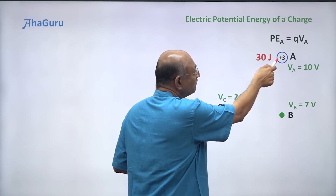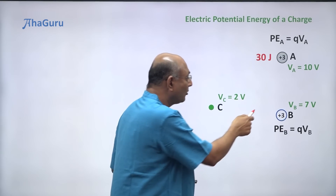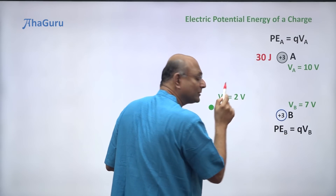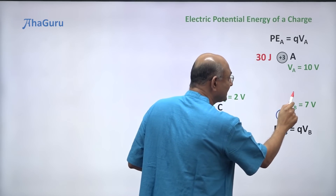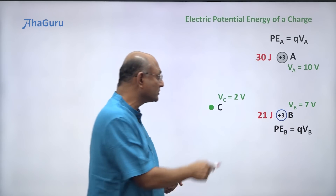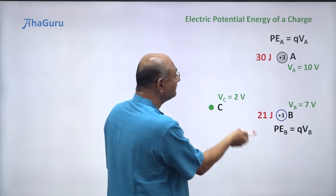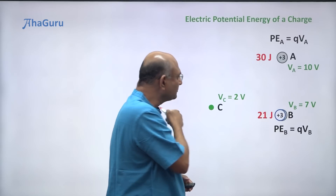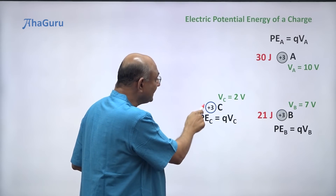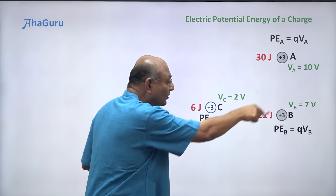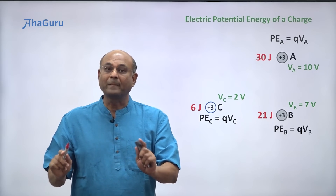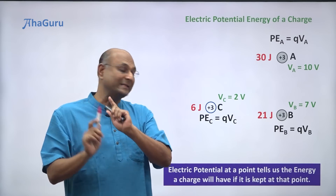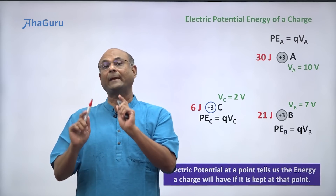Suppose this charge moves from A to B — how much energy will it have? It won't have 30 joules anymore because the potential energy at B is Q times VB. That means 3 times 7, so the energy will be 21 joules. The same charge had 30 joules at A, but when it moves to B it has only 21 joules. If the charge moves to C, it will have 3 into 2, which is 6 joules. At different locations, the charge has different amounts of energy, decided by the potential at that location.